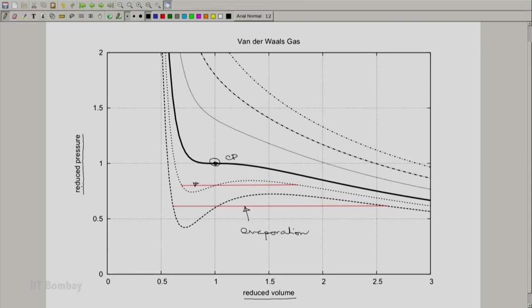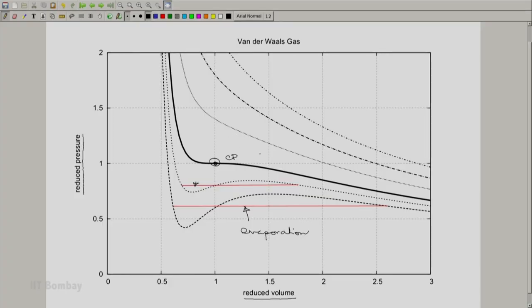Using reduced pressure, reduced volume, and reduced temperature, we can plot the isotherms of all gases which follow the Van der Waals equation of state on one single plot. Now if you have appreciated this, this isotherm pertains to a reduced temperature of one.